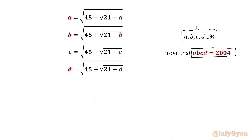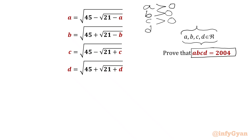As we have A, B, C, D as real numbers, we can write here A must be positive, B must be positive, C must be positive, and D also must be positive.